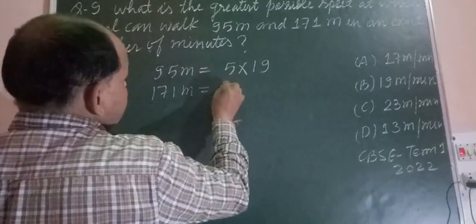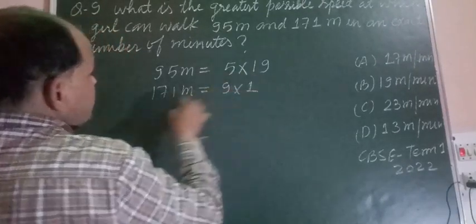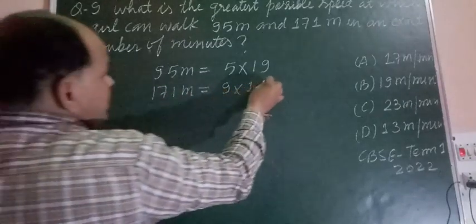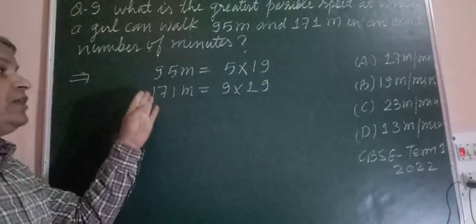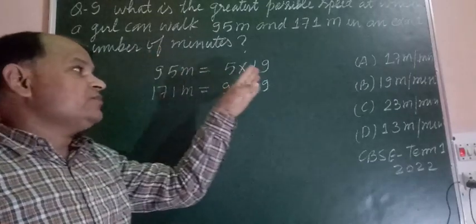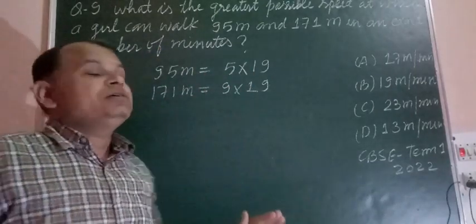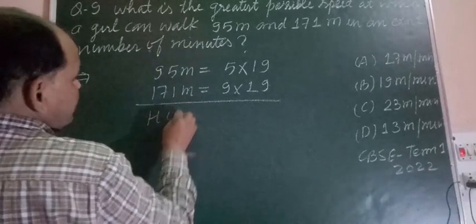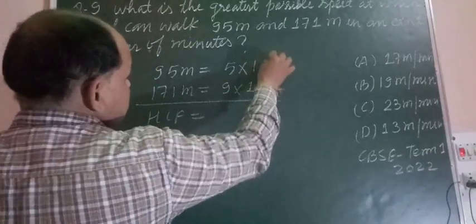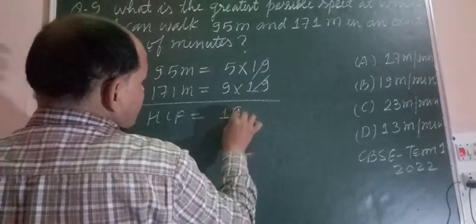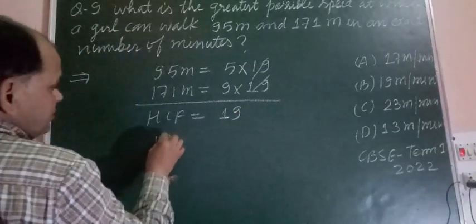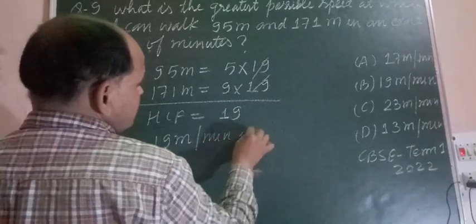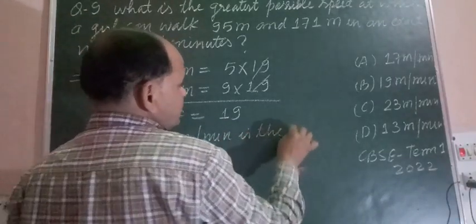171 equals 9 times 19. So the factors of 95 are 5 and 19, and 171 is 9 and 19. Therefore, the maximum speed is the HCF of these numbers, which is 19. So 19 meters per minute is the maximum speed.